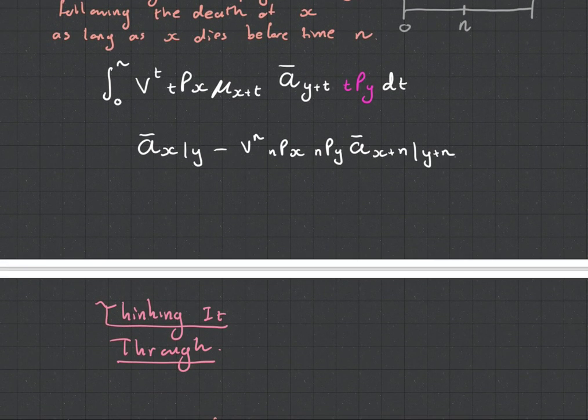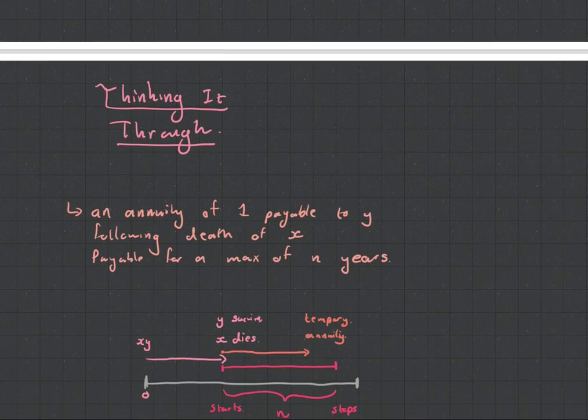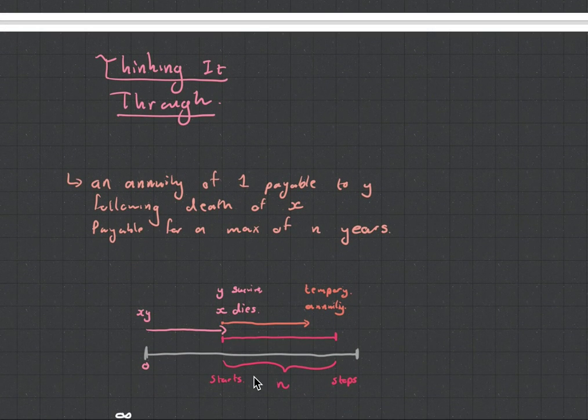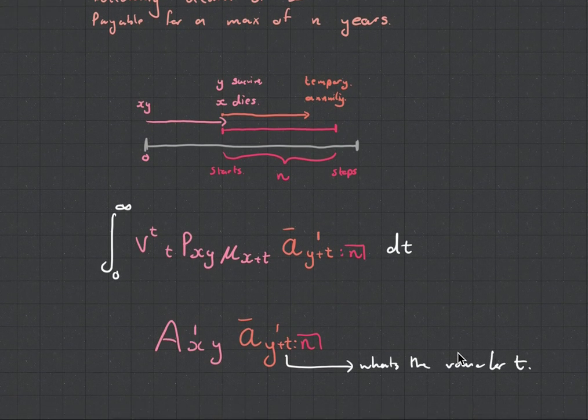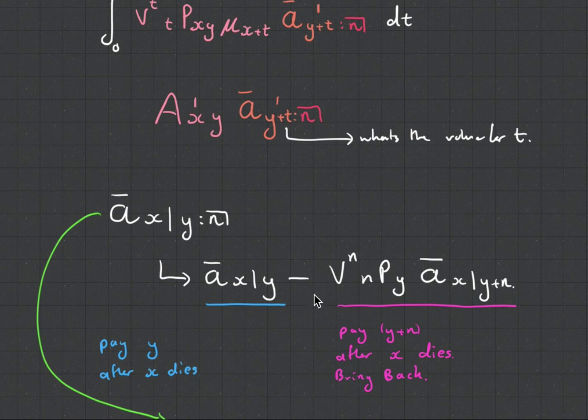But what I like to do with these questions is I like to think them through. I like to draw timelines. So with this one, it's an annuity of 1, payable to life Y following the death of X, payable for a maximum of N years. So what I do here is I just draw my timeline, what's happening. I have my different colors, they relate to different things. I then look at the formula and I kind of figure it out.